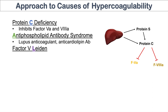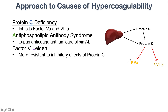Factor V Leiden — the L in CALM — is essentially a mutant activated factor V that does not respond to the inhibitory effects of protein C. It acts like a protein C deficiency. Factor V Leiden is a condition where factor V is more resistant to the inhibitory effects of protein C, and like antiphospholipid antibody syndrome, it is relatively common among hypercoagulation conditions.